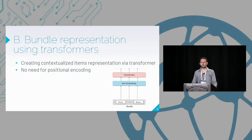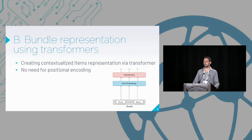Next is the bundle representation. Transformers help us learn a contextual representation between different items within a bundle. We also need to remember that one characteristic of the transformer is positional encoding — but since we do not have any order in the bundle, we omit the positional encoding part of the transformer.